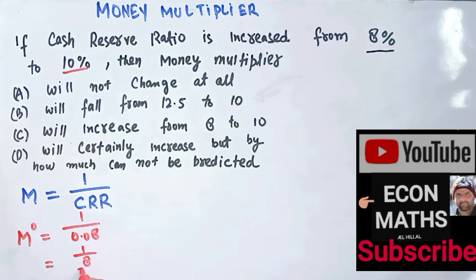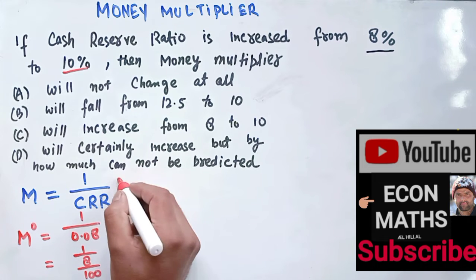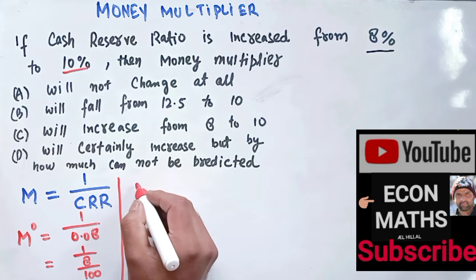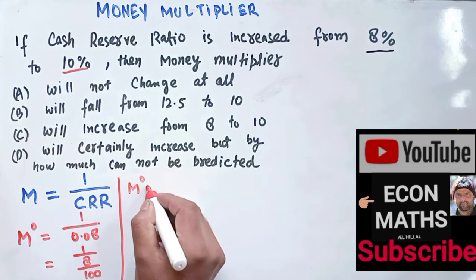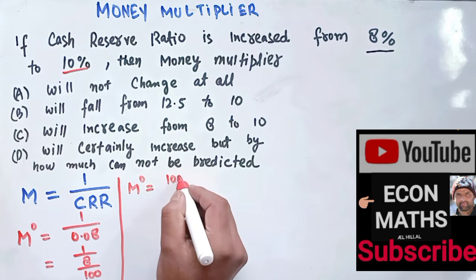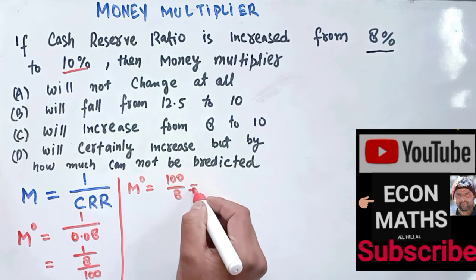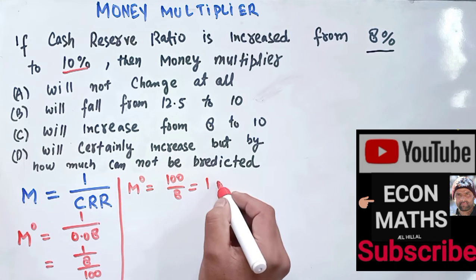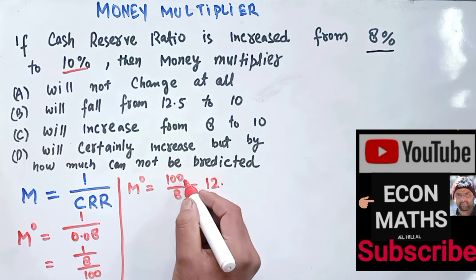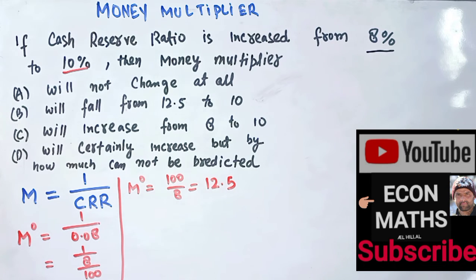So our initial money multiplier will be equal to 100 upon 8. So this is 8 ones are 8, 8 twos are 16, so this becomes 8, 5, or 40. So initially our money multiplier will be 12.5.